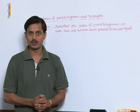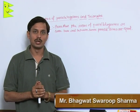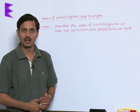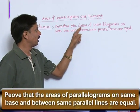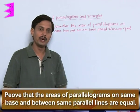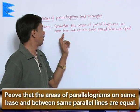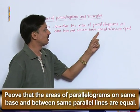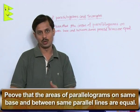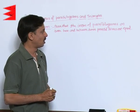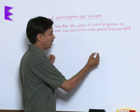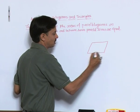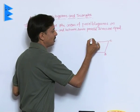An important theorem I am going to discuss is based on the areas of parallelograms on the same base and between same parallel lines. We will prove that the areas of two or more parallelograms on the same base — or equal base — and between same parallel lines are equal. To illustrate this, suppose we have a parallelogram named ABCD.